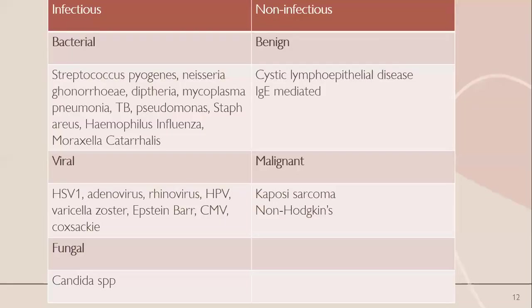ENT manifestations can be classified into infectious and non-infectious. On the infectious side we have bacterial, viral, and fungal; on the non-infectious side, benign and malignant. Common bacterial infections in HIV patients include Strep pyogenes, Neisseria gonorrhea, diphtheria, Mycoplasma pneumoniae, Strep pneumoniae, Staph aureus, Haemophilus influenzae, and Moraxella catarrhalis. Viral infections include herpes simplex 1, adenovirus, rhinovirus, human papillomavirus, varicella zoster, Epstein-Barr, cytomegalovirus, and coxsackievirus. Fungal infections mostly include candida species. Benign non-infectious conditions include cystic lymphoepithelial disease and IgE-mediated diseases. Malignant conditions include Kaposi's sarcoma and non-Hodgkin's lymphoma.